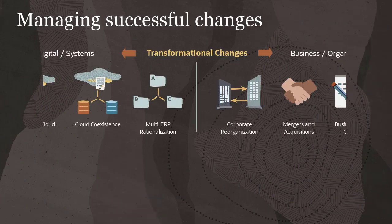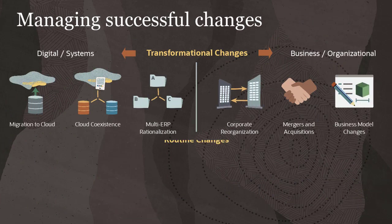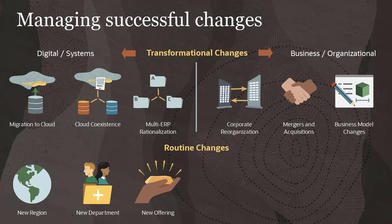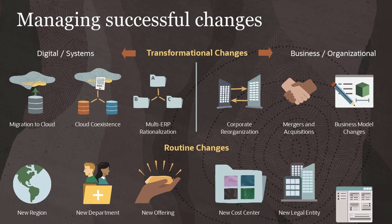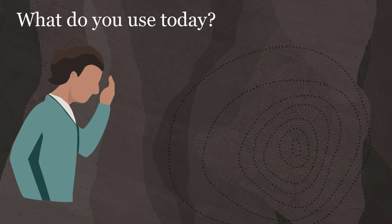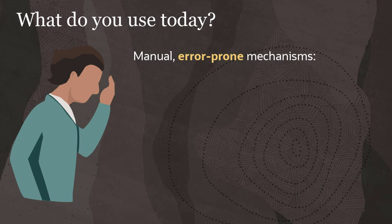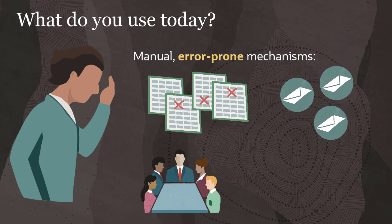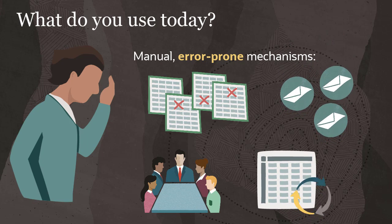In addition to transformational changes, businesses manage ongoing routine changes to enterprise data when they add new regions, departments, product or service offerings, cost centers, legal entities, and projects. Changes, both routine and transformational, must be proactively managed. If your business is governing changes across enterprise systems using manual, error-prone mechanisms like disconnected spreadsheets, one-off emails, in-person meetings, or custom workflows, there is a better way.